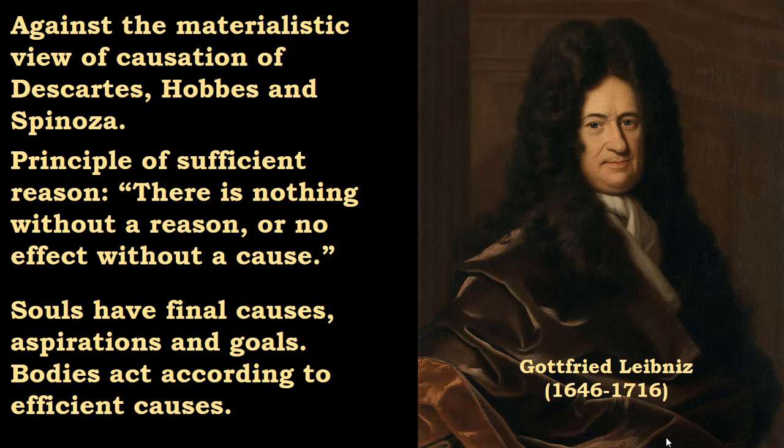Leibniz added that bodies act according to efficient causes, so efficient causes correspond to objects, but there are souls that have final causes and goals. Leibniz had a theory about reality in which souls were everywhere — the universe was composed of souls, which he called monads. This marks a return to goals in the universe.